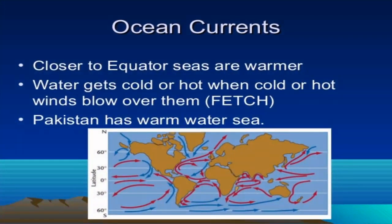Now let's talk about oceanic currents. Closer to the equator, seas are warmer. Water gets cold or hot when hot or cold winds blow over them. Pakistan has a warmer sea — near the Karachi border we have the Arabian Sea. Because Pakistan is located at 23.5 degrees north latitude, its water temperature is a little warmer compared to countries located near the north or south pole.